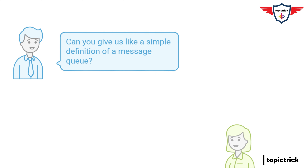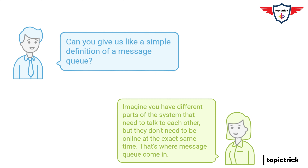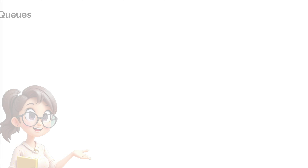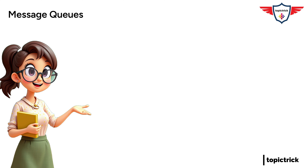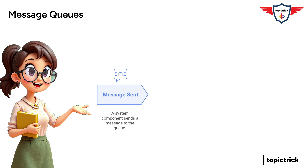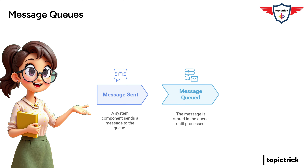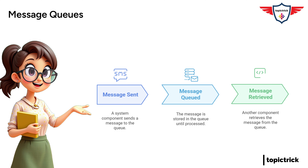Imagine you have different parts of a system that need to talk to each other but they don't need to be online at the exact same time. That's where message queues come in. They're like a temporary holding place for messages. One part of the system can send a message, and even if the other part is busy or offline, the message will just wait patiently in the queue until it's ready to be picked up. It's like leaving a voicemail.